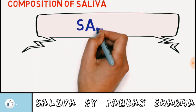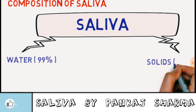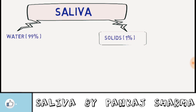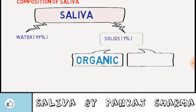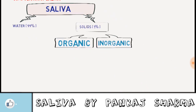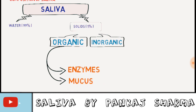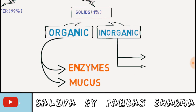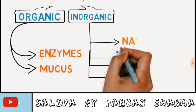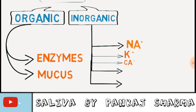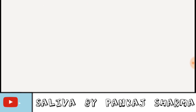Saliva consists of 99% water and 1% solids. The solid contents include organic and inorganic components. Organic contents are enzymes and mucus. Inorganic contents include sodium, potassium, calcium, bicarbonate, and chloride.